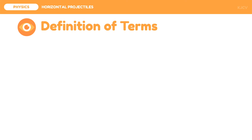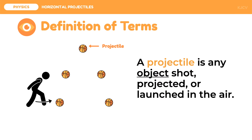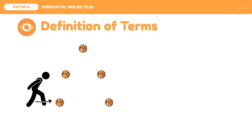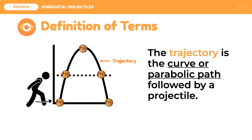Let us look at the terms involved in projectile motion. Suppose a ball is kicked by a person — that ball will follow projectile motion. In this case, the ball is what we call the projectile. A projectile is any object shot, projected, or launched in the air. The pathway which the ball followed is what we call the trajectory. The trajectory is the curve or parabolic path followed by a projectile.